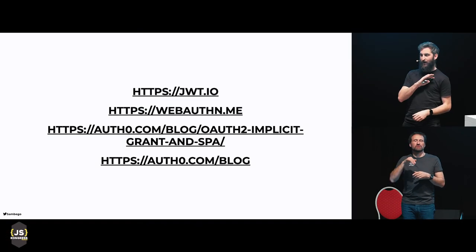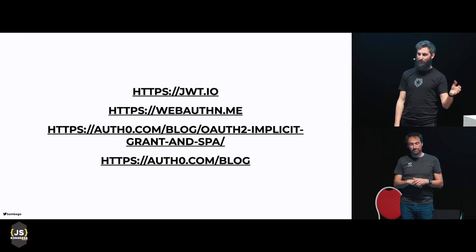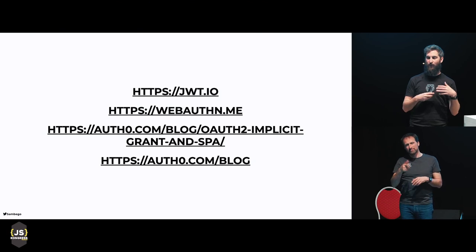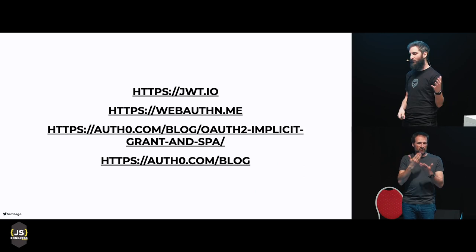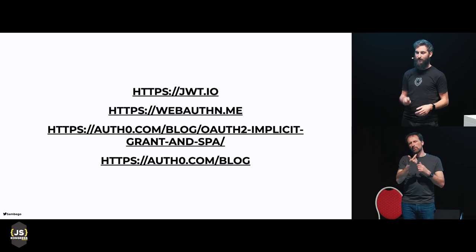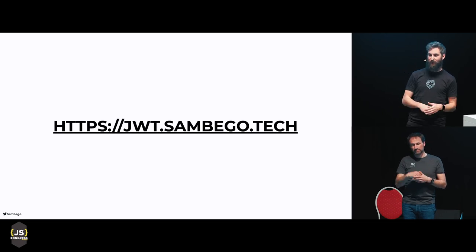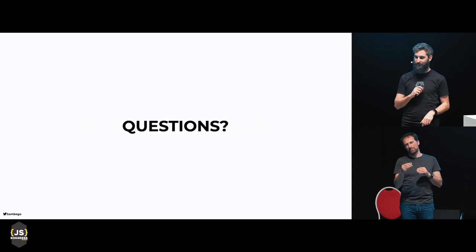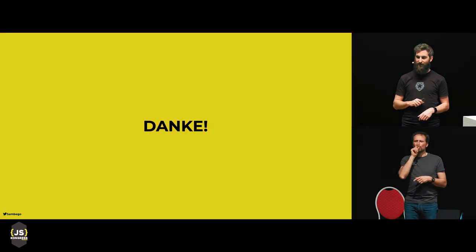If you want to know more, jsonwebtokens.io has all the information you want. We also have a blog post about moving from the implicit flow to the PKCE flow, which is now the recommended one, and a bunch of blog articles as well. If you want to see these slides, jwt.sambiga.tech — I will update them later but there's already a version there. If there are questions, come find me in the hallway or ping me on Twitter. Thank you.